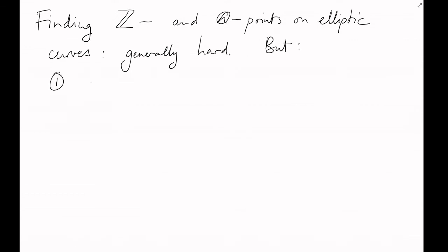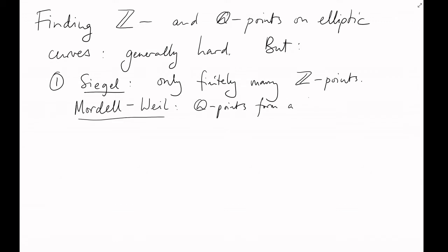But here are a couple of things I will mention. Firstly, while finding these solutions can be very difficult, there are general results to help us out. A theorem of Siegel in algebraic geometry implies that elliptic curves only have finitely many integer points, and the Mordell-Weil theorem implies that their rational points form a finitely generated Abelian group.